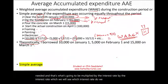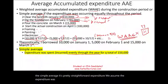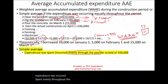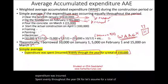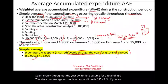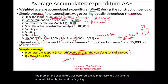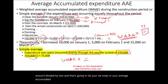If we're using the simple average, it's pretty straightforward. We assume the expenditure was incurred evenly throughout the year. So if the total expenditure is $150,000, the average accumulated expenditure is $150,000 divided by 2. If you are told in the problem that expenditures were incurred evenly, you take the amount divided by 2 — that's your average accumulated expenditure — and then multiply it by the interest rate percentage.